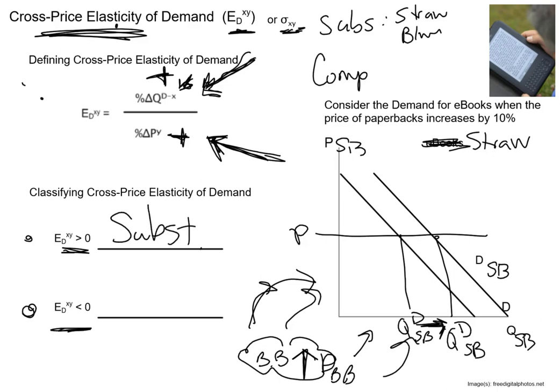Think about two goods that are economic complements and convince yourself they move in the opposite direction. For a complement, if the price goes up, it's going to push down demand, and so our cross-price elasticity of demand is going to be a negative value.